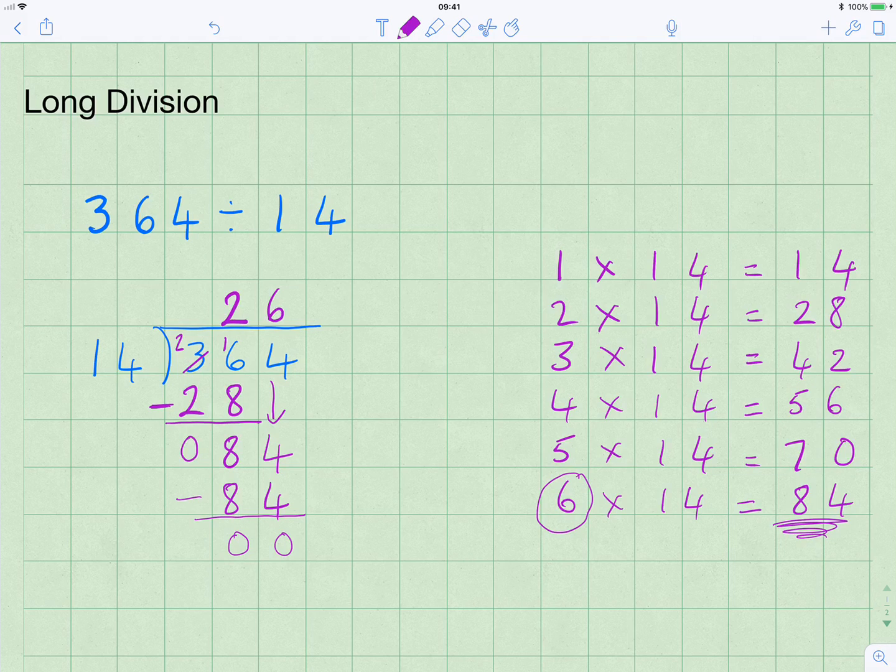So we can say 364 divided by 14 equals 26. And again, as I said in the previous video, you can work that backwards. Check this on your calculator or use long multiplication. Does 26 times 14 equal 364? Well, it does. So that is the correct answer.